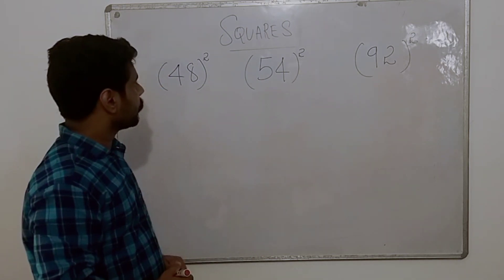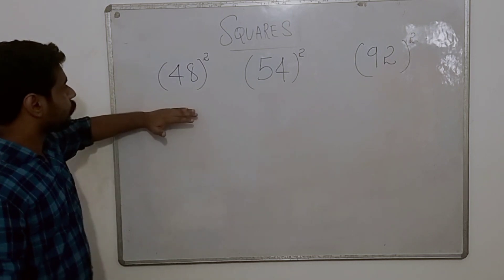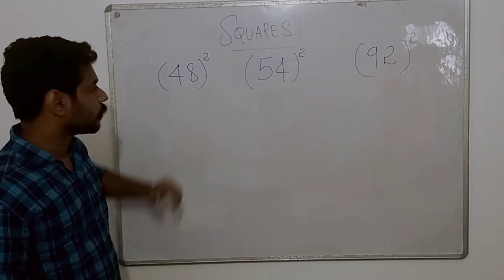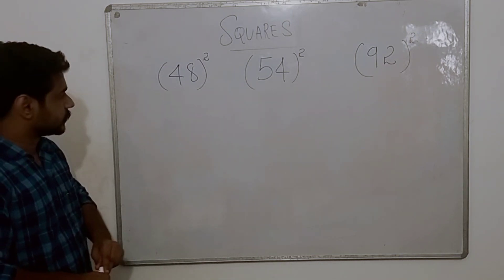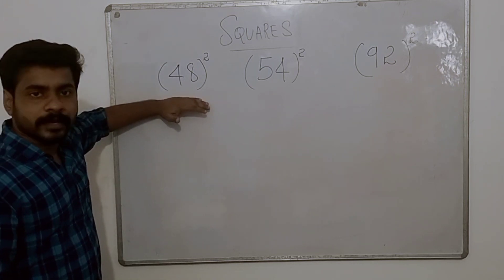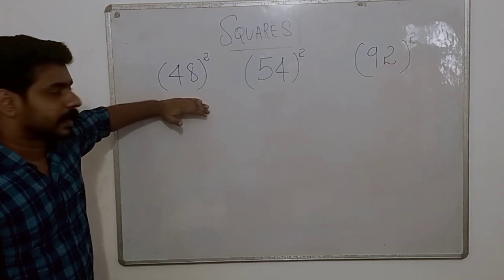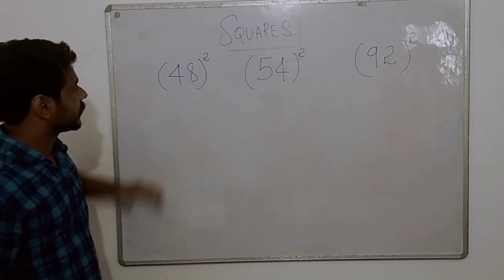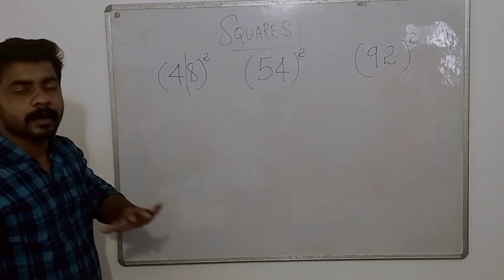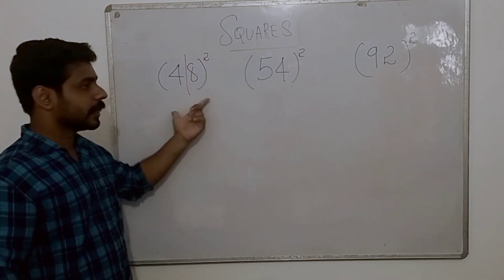So, how many methods are we using? Starting with a two-digit number: 48 squared. We can split the number 48 into two parts. So 48 is the number we will split.